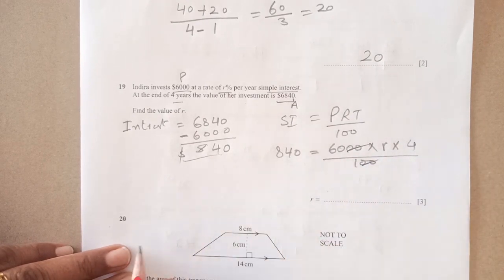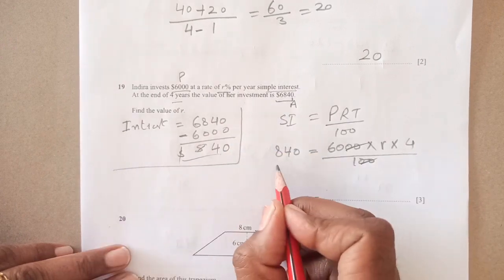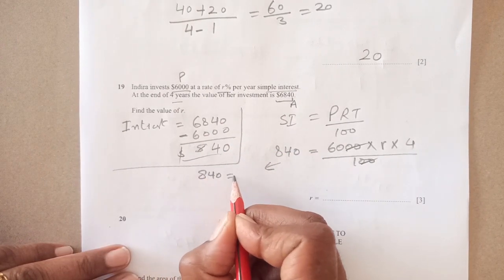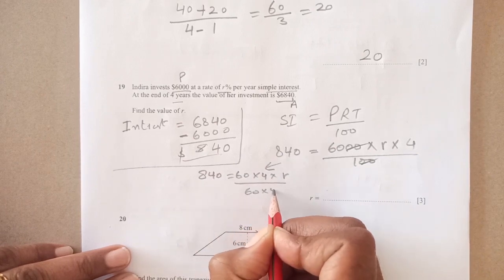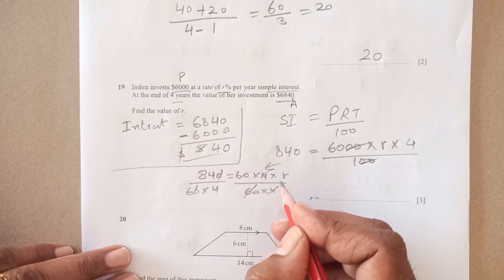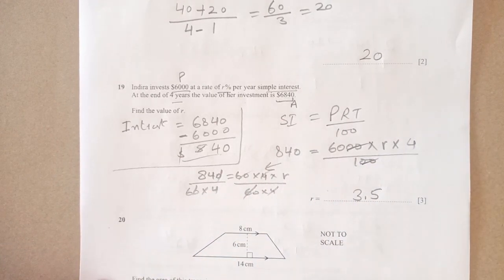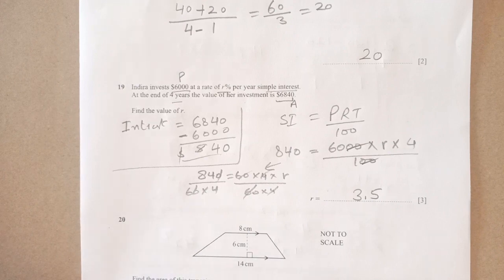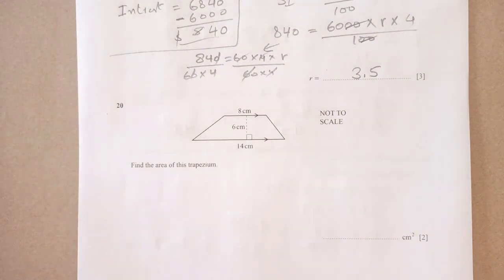Simple interest is 840, principal is 6000, r we don't know, time is 4 years, over 100. Simplifying, we have 840 equals 60 times 4 times r. Divide by 60 times 4. Once you calculate this, it comes out to be 3.5. That is the percentage of the rate of interest.